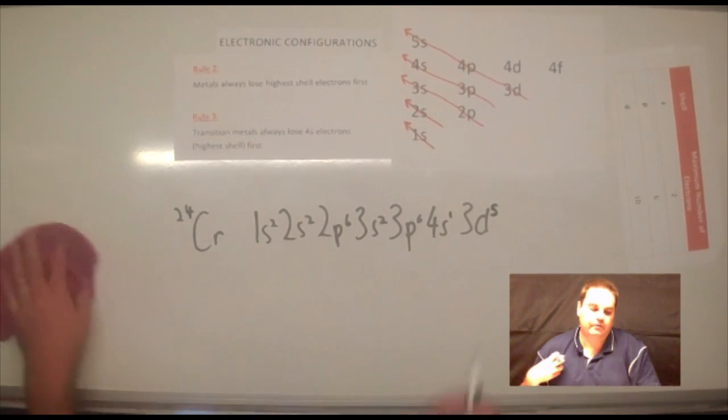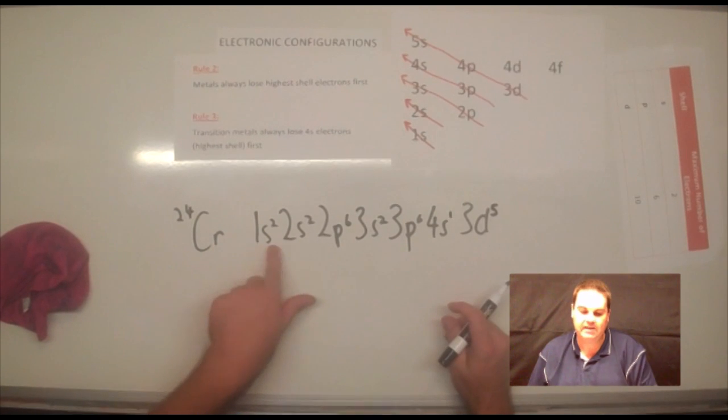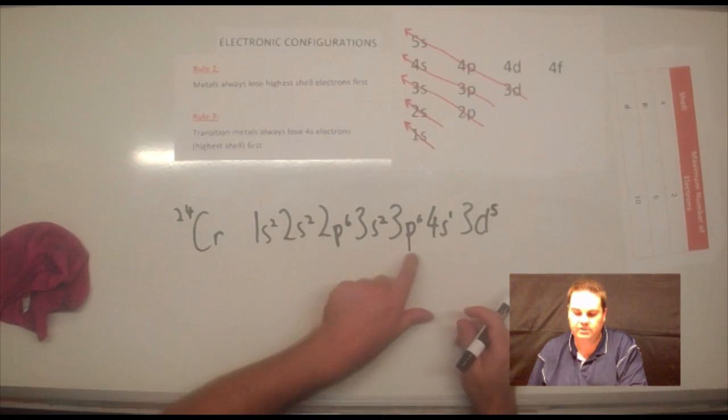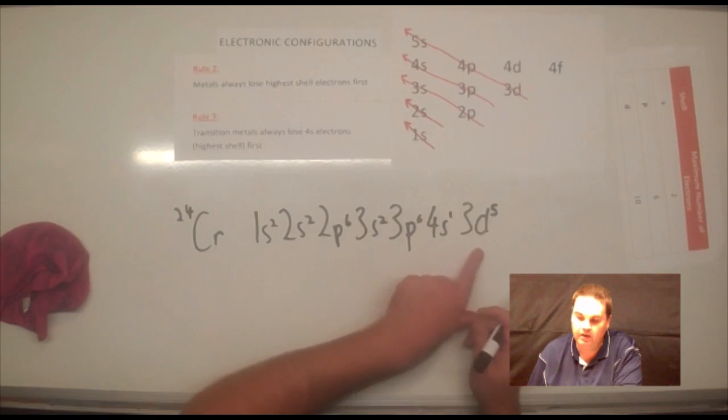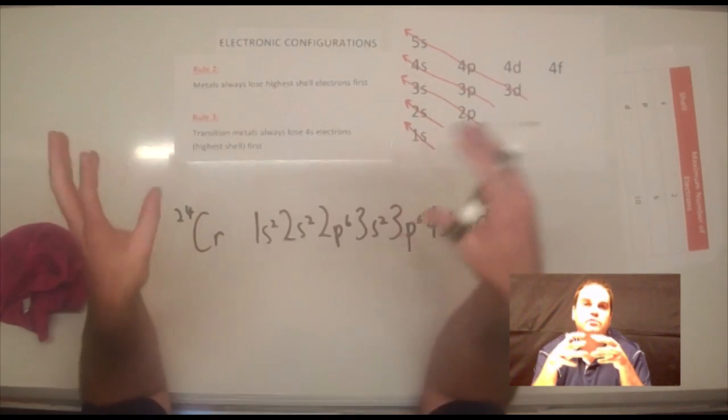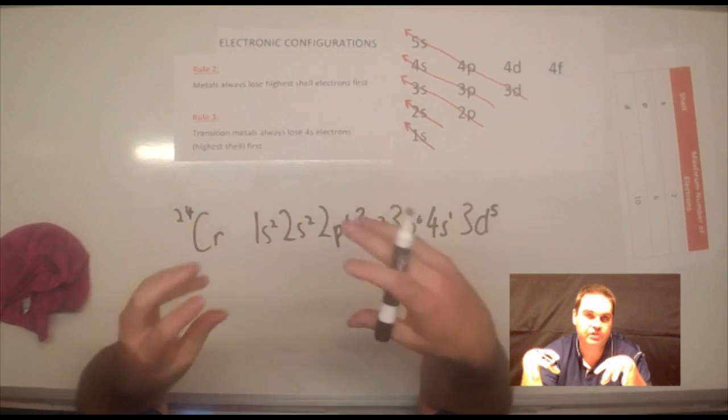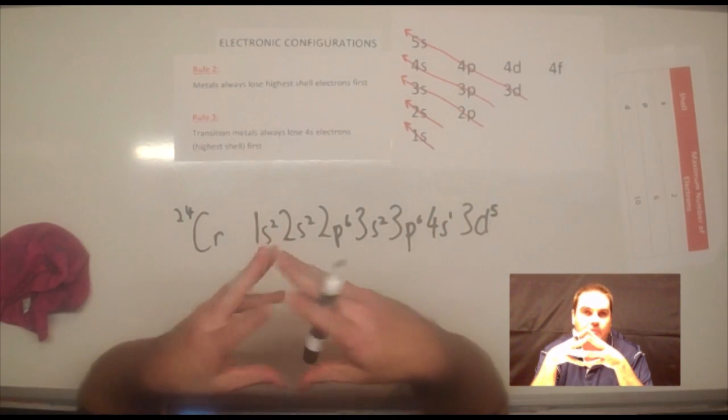So, when you're writing the electron configuration for chromium, it's actually 1s2, 2s2, 2p6, 3s2, 3p6, 4s1, 3d5, in order to separate all those electrons, minimize the repulsion, and make it more stable.